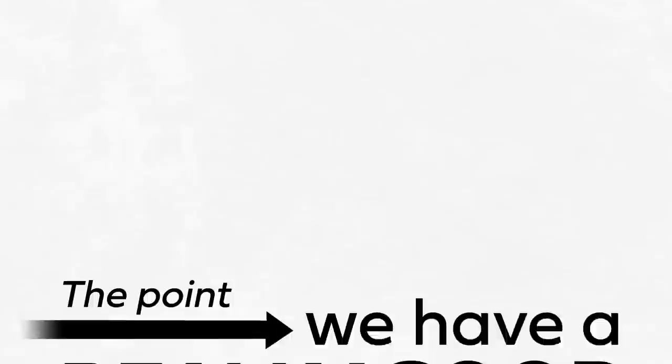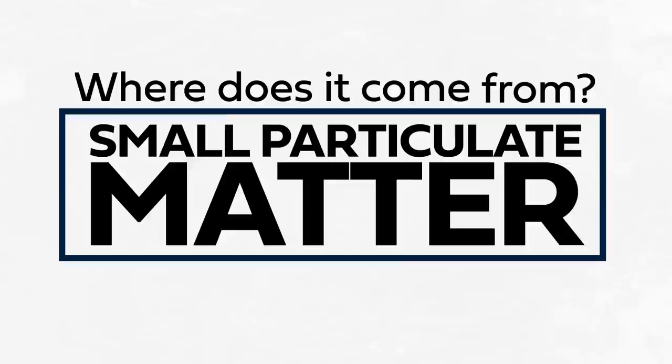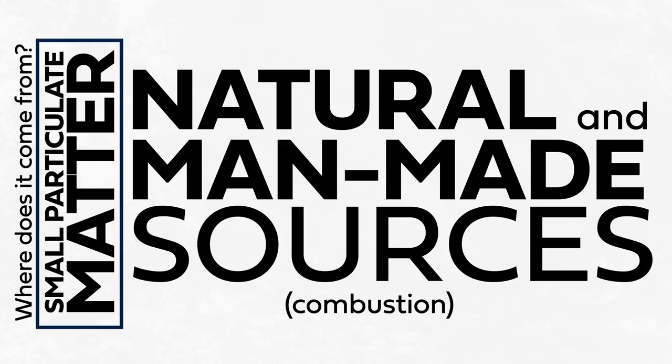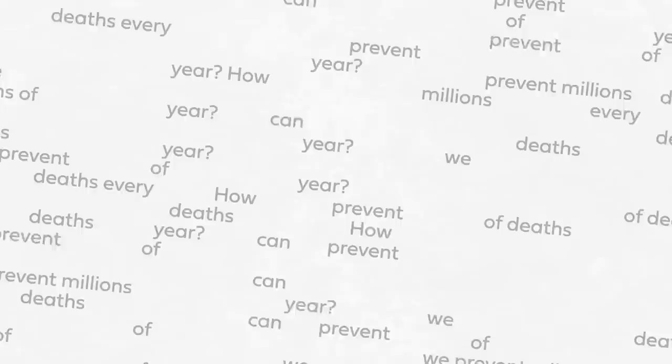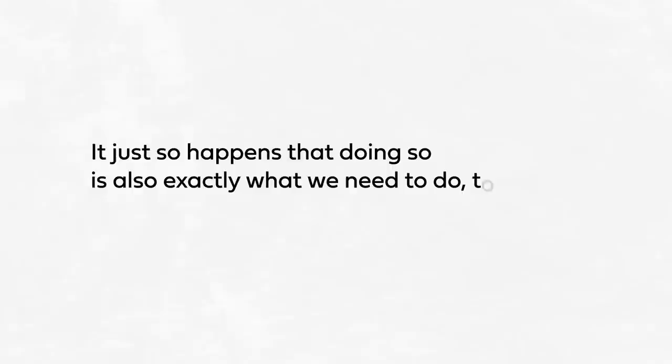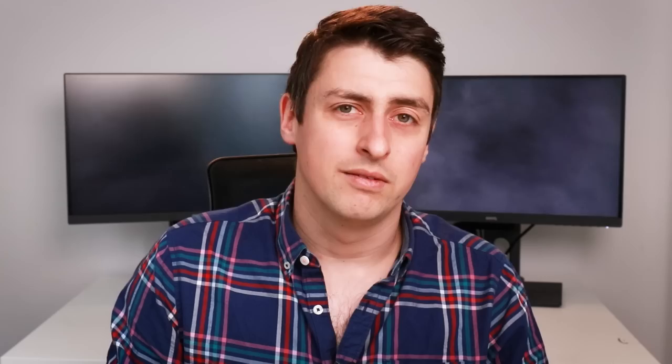The point is that we have a really good understanding of the world's leading environmental health risk factor — outdoor air pollution. We understand what it is: small particulate matter. Where it comes from: natural and man-made sources, the latter largely being due to combustion. And how we can prevent millions of deaths every year: rapidly phasing out the use of fossil fuels. Of course, it just so happens that doing so is also exactly what we need to do to prevent catastrophic climate change this century. As Ban Ki-moon said, tackling both these global problems at the same time is a win-win.